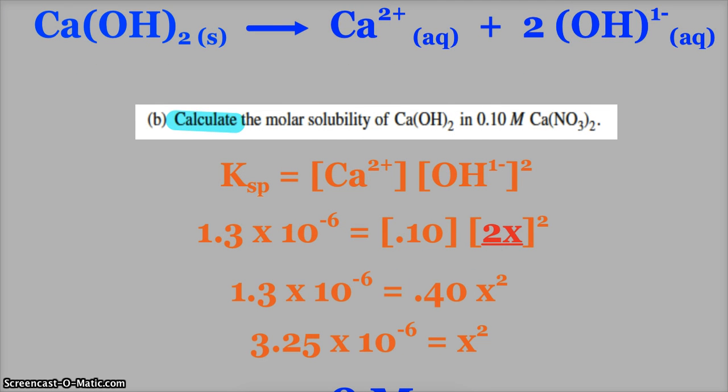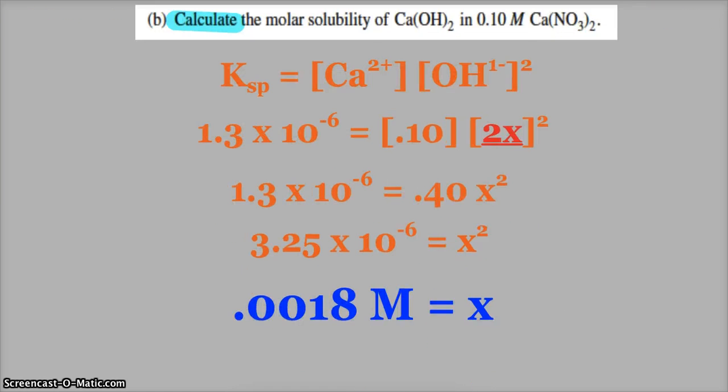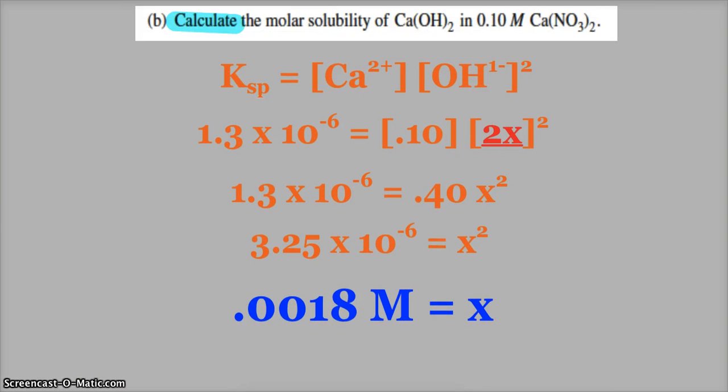Now I just plug and chug, and I've got my Ksp is equal to 0.4x squared, because that would be 2 squared is 4, 4 times 0.1 is 0.4. 0.4x squared, divide by 0.4, take the square root, and I get 0.0018 molar.